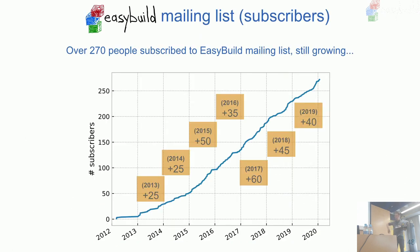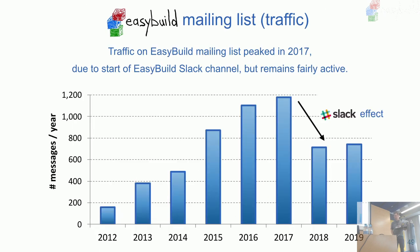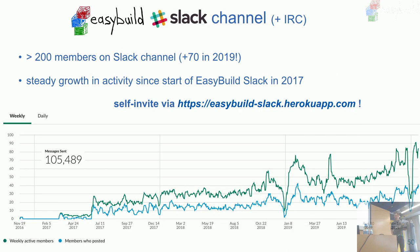The mailing list now has over 270 subscribers, even though it's getting less active — about 700 messages a year, down from over 1,000 in 2017, thanks to Slack. The Slack channel has over 200 people with accounts, and in 2019 about 50 people were active on a weekly basis. If you're not on Slack yet, there's a small app where you can drop in your email to get an invite — it's probably the best way now to reach out to the EasyBuild community for quick help.